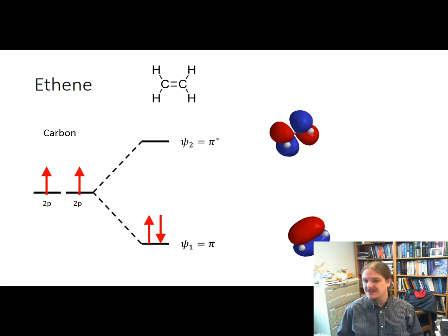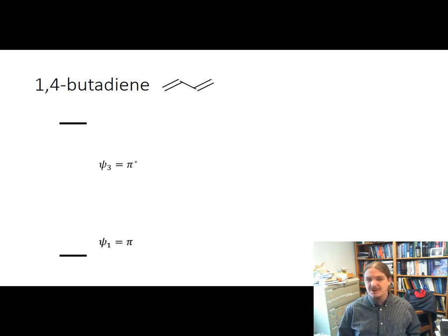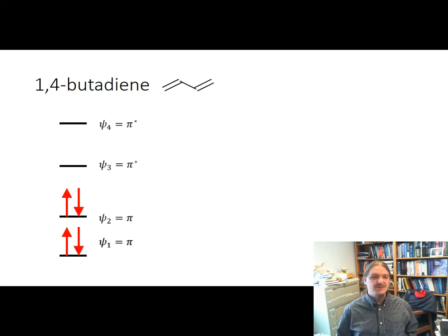The anti-bonding orbital kind of looks like a distorted set of p orbitals kind of pushing away from each other. And this is where we're starting with ethene, and ethene is not actually conjugated. So here comes the conjugated orbitals for 1,4-butadiene. I don't know what that animation thing where they came in in the wrong order, so I apologize for that.